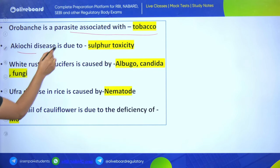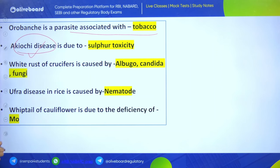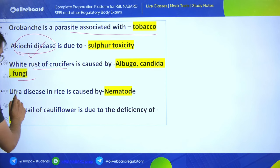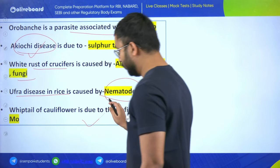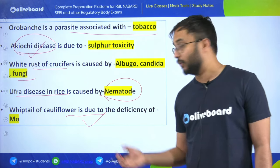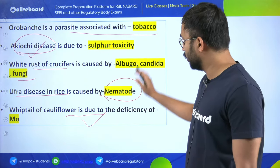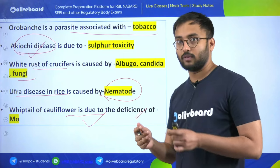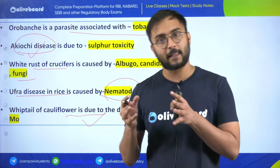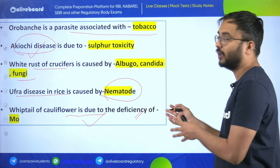Akiochi disease is due to sulfur toxicity. White rust of crucifers is caused by Albugo candida. Ufra disease in rice is caused by a nematode. Whiptail of cauliflower is due to deficiency of molybdenum. First we covered plant physiology, morphology, then genetics, now moving to plant diseases.